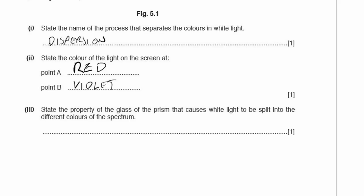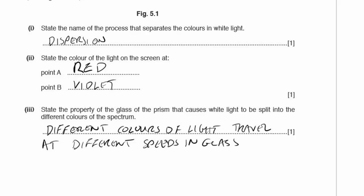Part 3: the property of the glass prism that causes white light to split into different colours is that different colours of light travel at different speeds in glass.